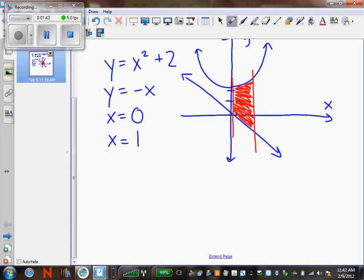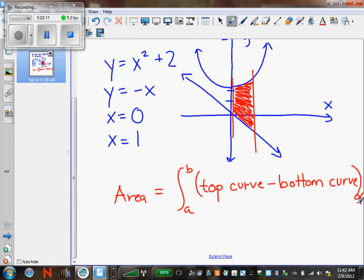To find the area of any shaded region, you will do the integral from a to b of the top curve minus the bottom curve, and this is dx in this case because our variables are variables in terms of x.